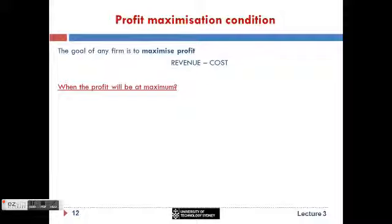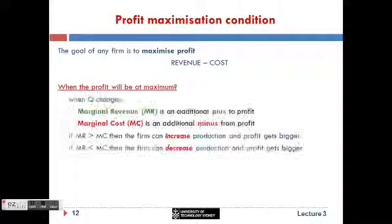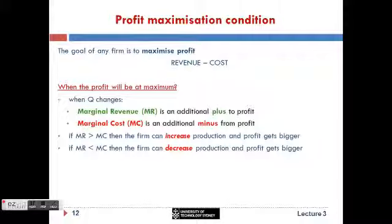I will start with this argument and then apply this condition to another numerical example. Think of any firm — this firm wants to maximize profit, and profit is revenue minus cost. When will profit be at maximum? When the firm changes its output, increasing it gets marginal revenue as a measure of additional revenue — an additional plus to profit. On the other hand it has to pay marginal cost, which is an additional minus from profit. So marginal revenue is the benefit and marginal cost is the cost.